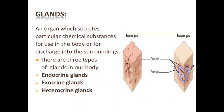In this diagram we can see that two types — exocrine and endocrine glands — are present. Exocrine glands are ductful glands, while endocrine glands are ductless glands. You can see that the endocrine glands are shown inside in blue color in this diagram.